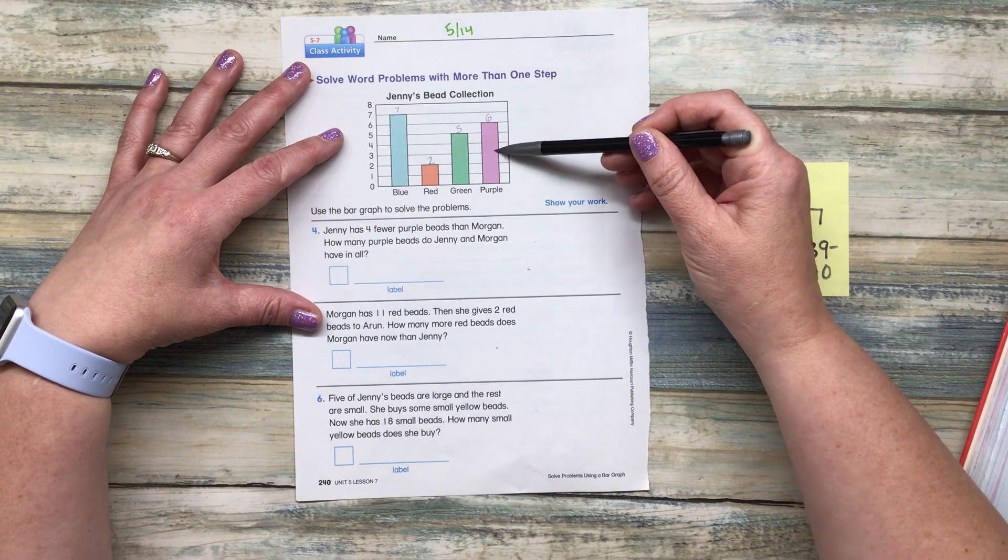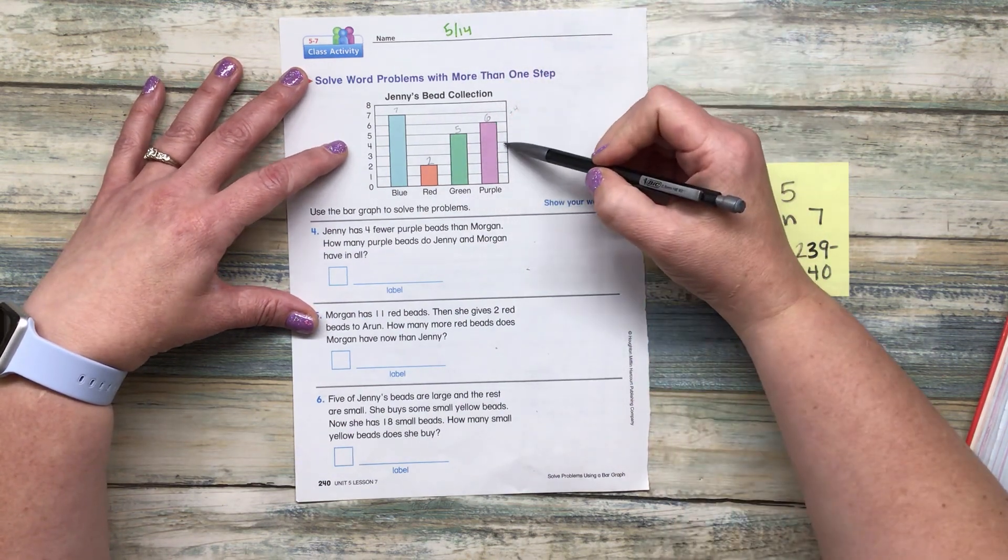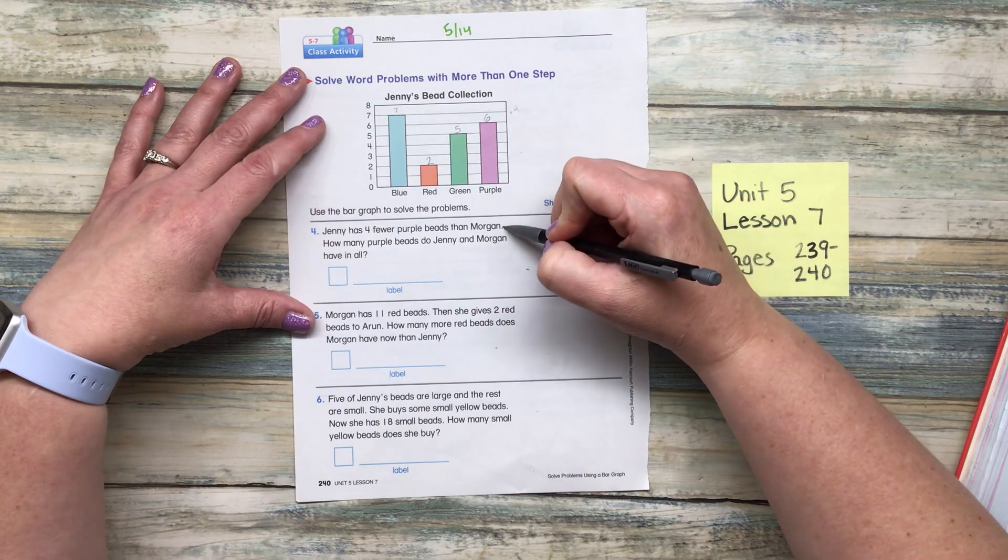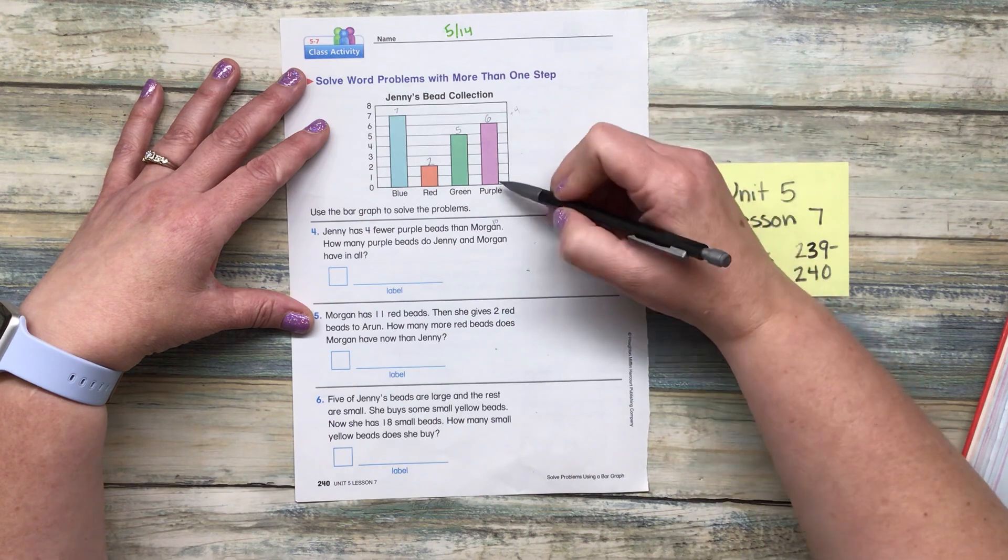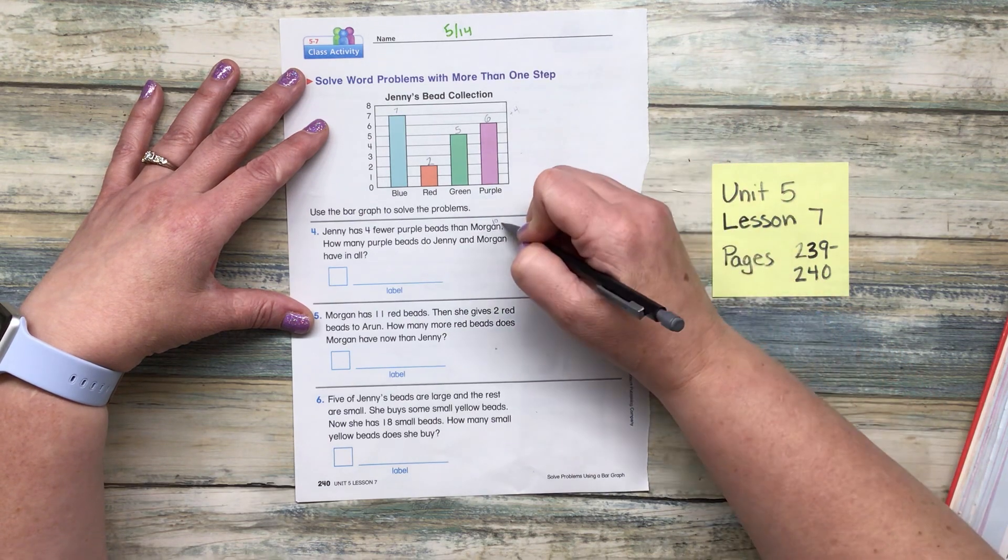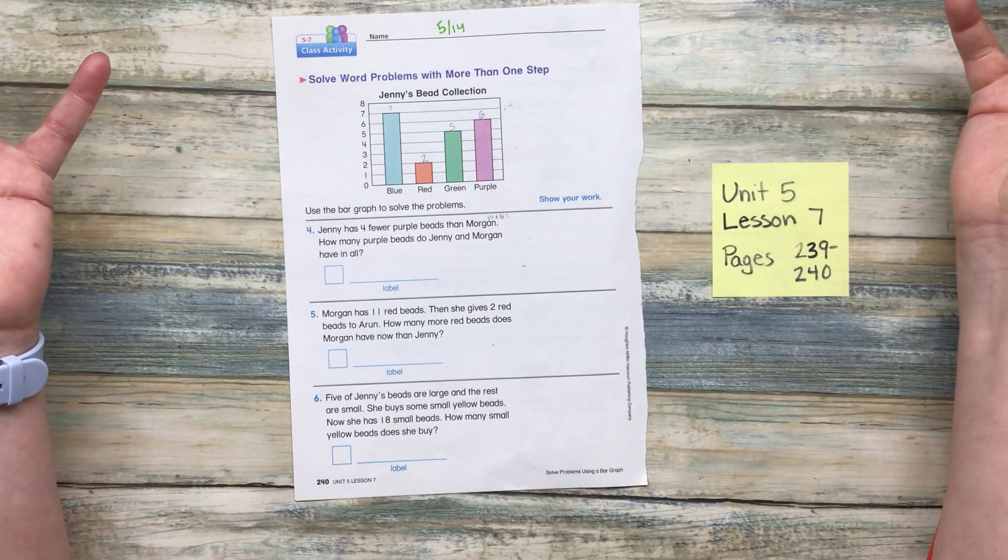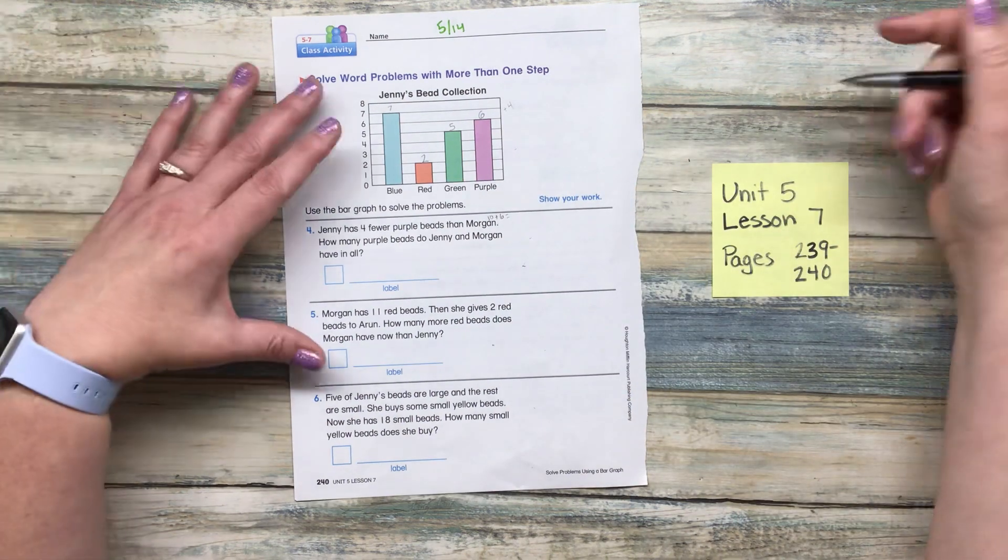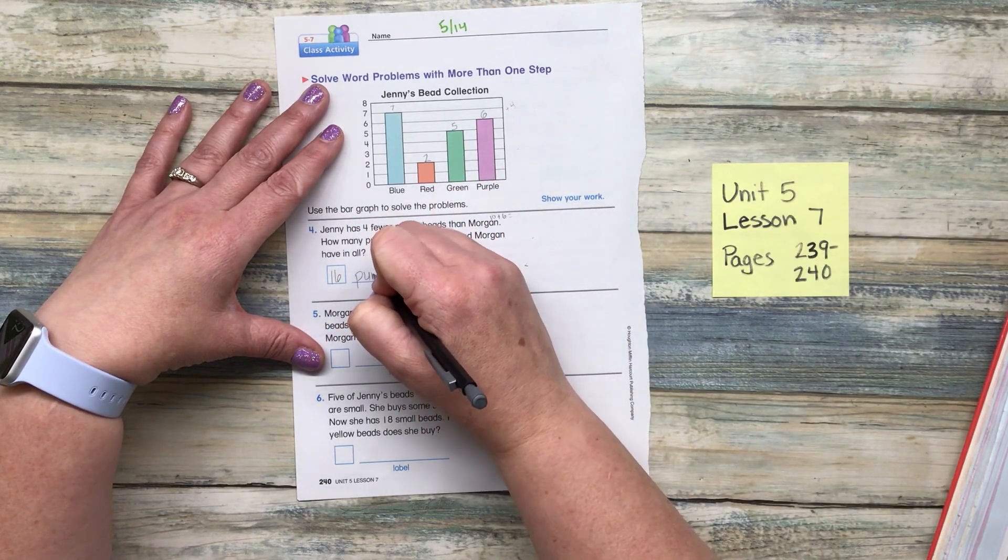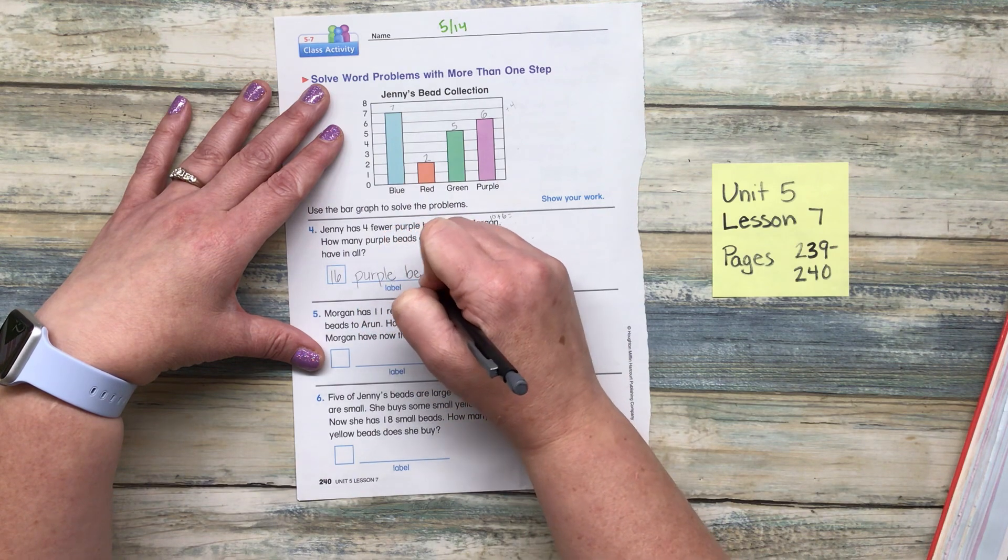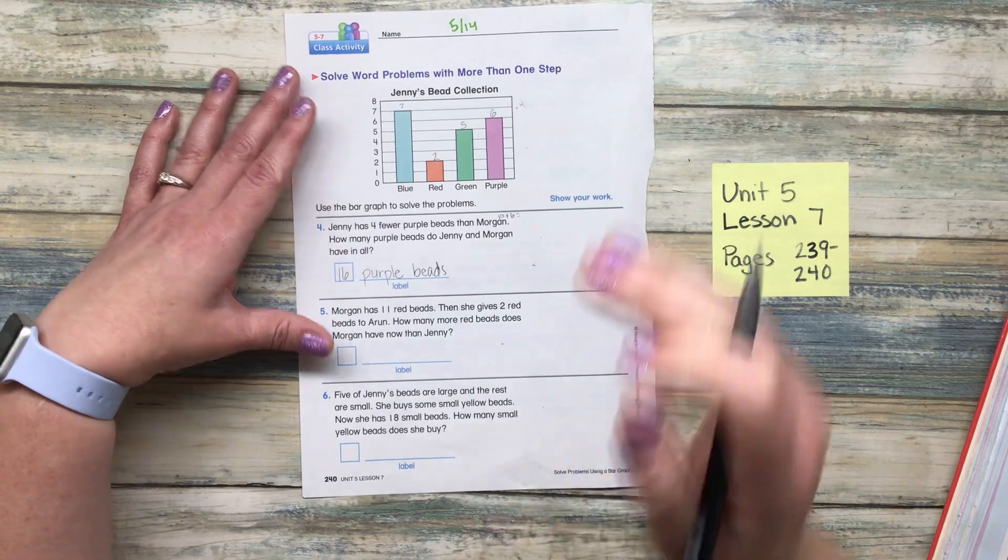So she has four fewer. So that means I'm going to add four to that. So Morgan has how many beads? Girl has 10. How many does she have? So how many purple beads do they have? Yeah. We're working with some pretty easy math here. It's mostly about figuring out what information they're looking for. So we've got 16 purple beads there.